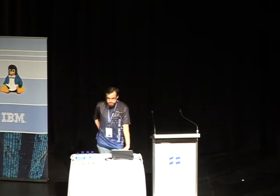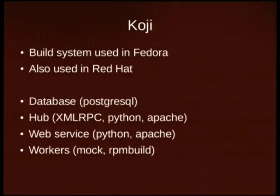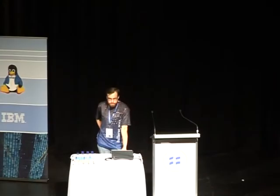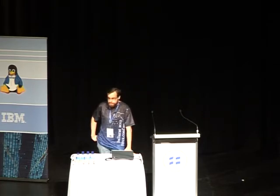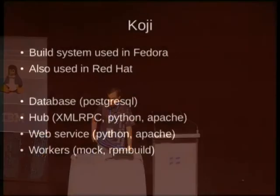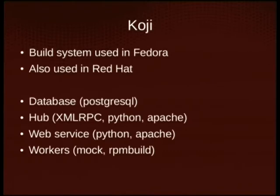Koji is the build system used in Fedora and internally in Red Hat. It's an open-source project, originally developed inside Red Hat and then brought into Fedora. It has a database store for all the metadata about builds, a hub server which does XMLRPC and lets clients access the database indirectly, a web service for users to see build history, and a bunch of workers which actually do the builds, running mock and RPM build.